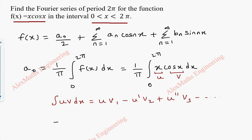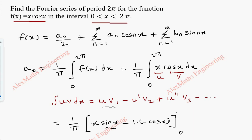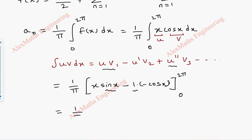Directly writing (1/π): the first term u·v1 is x times the integral of cos(x) which is sin(x), minus u' — the derivative of x is 1 — times v2, which is the integral of v1. v1 is sin(x), whose integral is −cos(x). We have limits from 0 to 2π. The third part is zero because u'' (derivative of 1) is 0. So we have only two terms: (1/π)[x·sin(x) + cos(x)] from 0 to 2π.